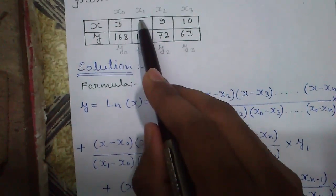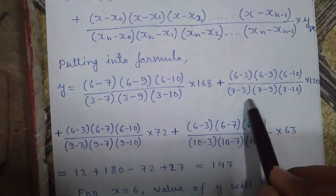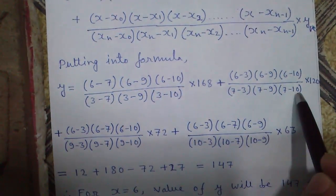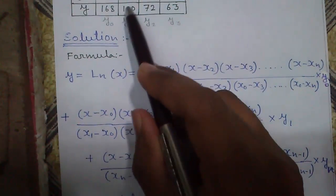This is x1, 7. Then x1 minus x0, x1 minus x2, and x1 minus x3. So that gives 7 minus 3, 7 minus 9, and 7 minus 10 times y1. y1 is 120.